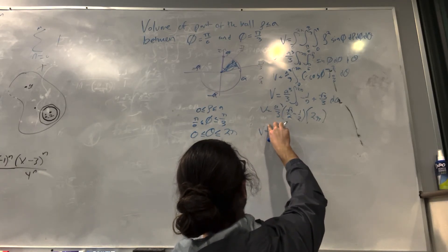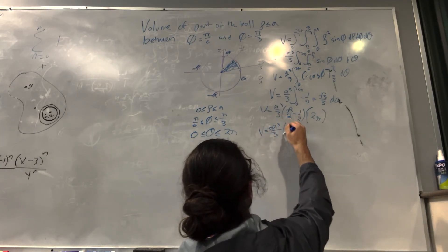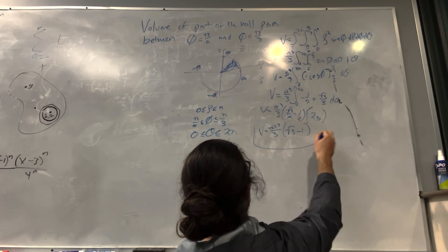The answer is pi a cubed over 3 times the quantity square root of 3 minus 1, and this is our final answer.